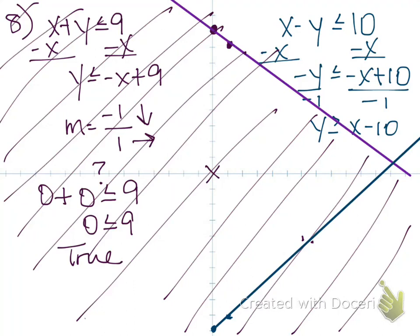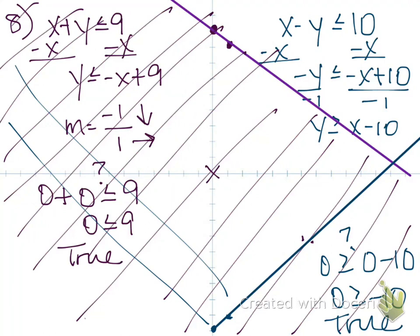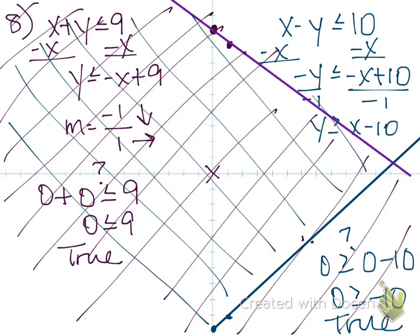And then if I test 0, 0 in this inequality, if I plug in 0 greater than or equal to 0 minus 10. So I get 0 greater than or equal to negative 10. Is that true or false? That's true as well. So this also gets shaded on the 0, 0 side.